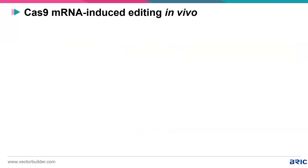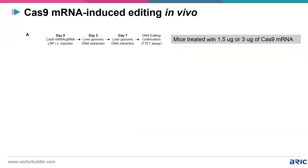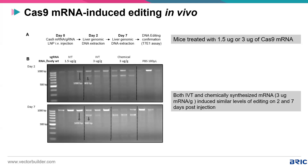The IVT RNA system with mRNA and guide RNA can also be used in vivo. Cas9 mRNA and guide RNA were encapsulated in LNP and injected into mice; genomic DNA was extracted at day two and day seven. A T7 assay was used — multiple bands on the gel indicate a mutation occurred, while a single band around 1000 bp means no mutation. Both in vitro transcribed and chemically synthesized Cas9 mRNA at 3 micrograms RNA per gram of body weight successfully introduced mutations in vivo in mice.